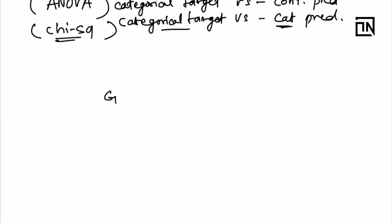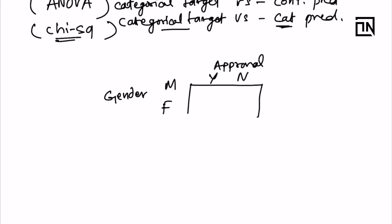To analyze whether gender is related to the loan approval target variable, you cross-tabulate. You list the unique gender values — male and female — and the loan approval statuses — yes or no. Then you count: for male, say 50 cases were approved and 5 were rejected. For female, say 70 loans were approved and 9 cases were rejected.